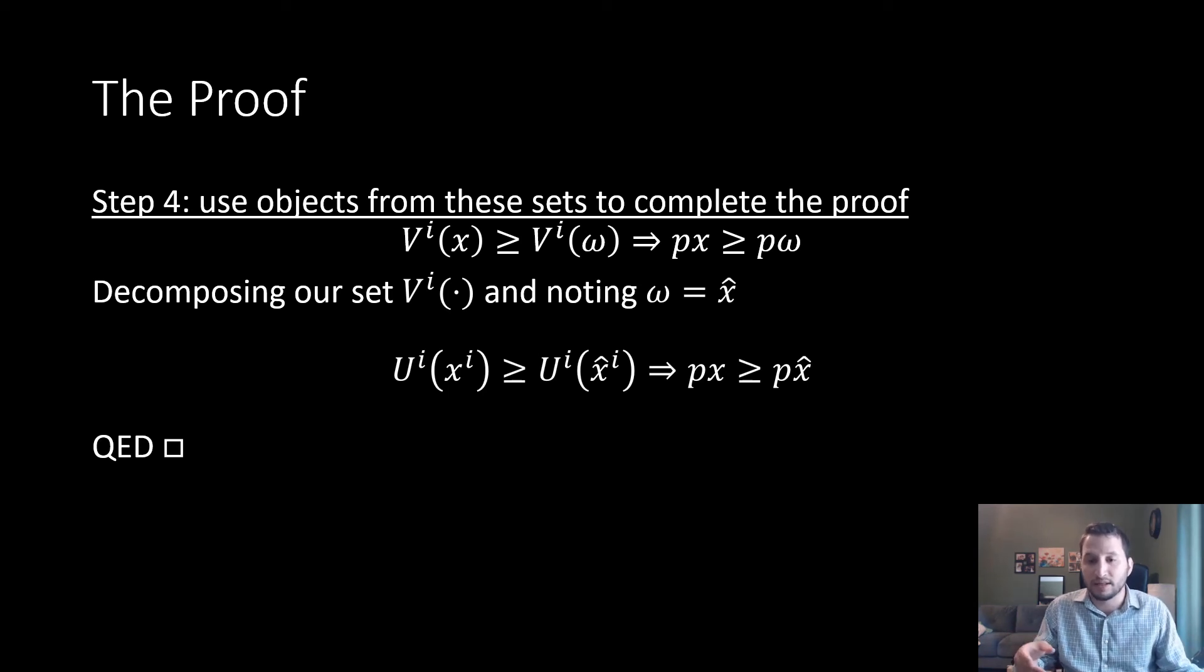If we plug in that result and we know what the properties of V^i are, which is just going to be a set of U^i's evaluated at those optimums, we get the following result here, which is exactly what the second welfare theorem states, which is the end of our proof.